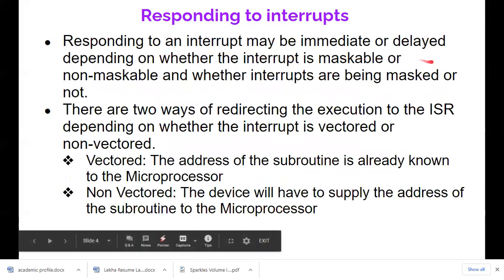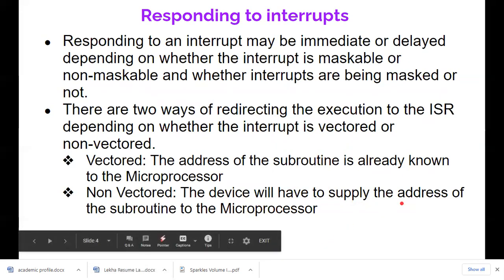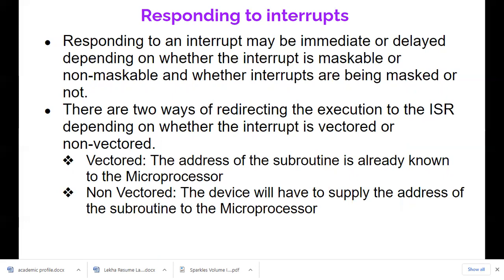Responding to an interrupt may be immediate or delayed — this is where maskable and non-maskable come in. Maskable interrupts can be delayed or attended immediately depending on whether the interrupt is maskable or non-maskable and whether interrupts are being masked or not. There are two ways of redirecting execution to the ISR depending on whether the interrupt is vectored or non-vectored. For vectored interrupts, the address of the subroutine is already known to the microprocessor. For non-vectored, the device must supply the address or the user must specify it in code.